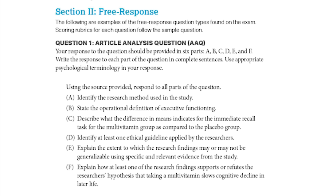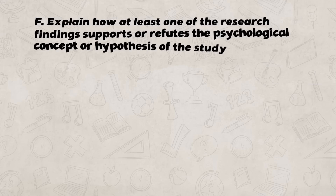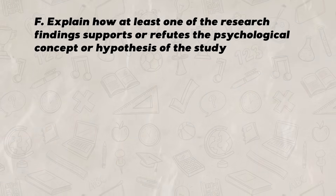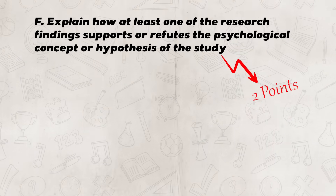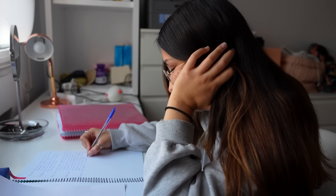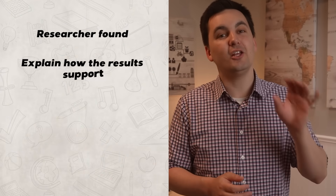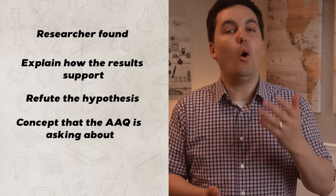Part F is the last part of the AAQ: explain how at least one of the research findings supports or refutes the psychological concept or hypothesis of the study. This is the only part worth two points, not one, so make sure you spend some time and think through your answer. Clearly state what the researcher found, then explain how the results support or refute the hypothesis or concept. Frame your answer by first stating your conclusion, then follow up with an explanation connecting to the data and findings from the study.